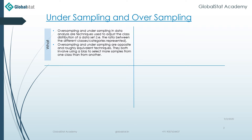These terms are used in both statistical sampling, survey design methodology, and in machine learning. Oversampling and undersampling are just opposite and roughly equivalent techniques. They both involve using a bias to select more samples from one class than from another.